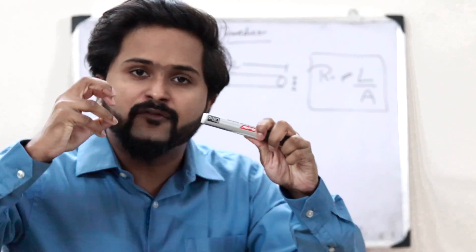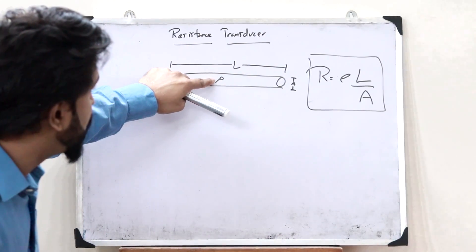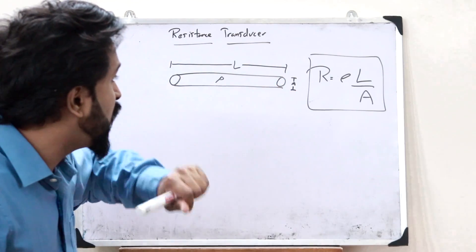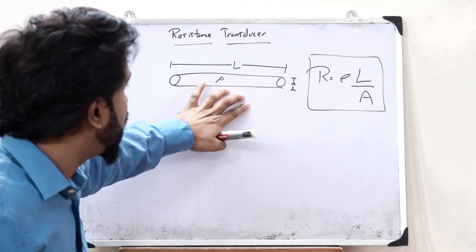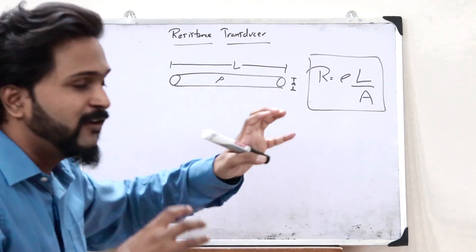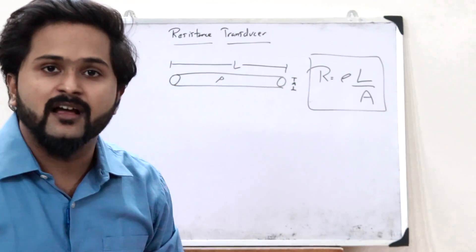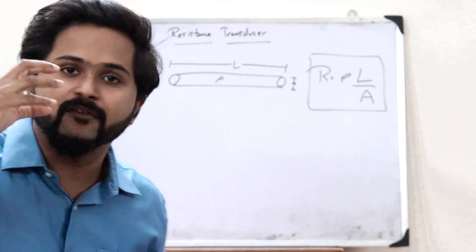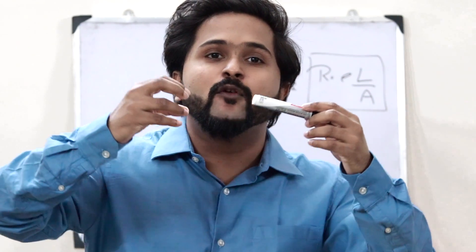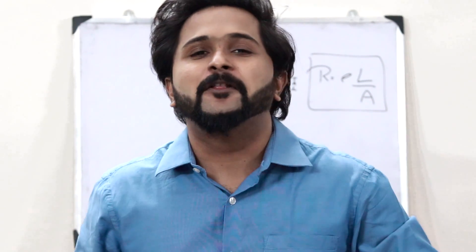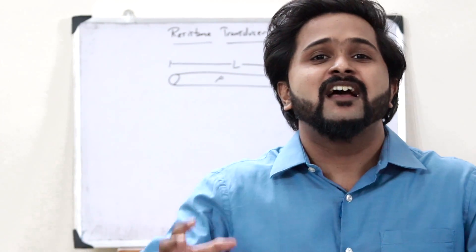what happens is that if a particular physical quantity can change either one of these parameters — that is either the resistivity, the length, or the area of cross-section of this particular conductor — then the resistance of this particular conductor will change, because resistance depends on these three parameters. Therefore, if a resistance transducer is used to measure a physical quantity and that physical quantity varies one of these parameters, a change in resistance is obtained. And this change in resistance can be used for the purpose of measuring that particular physical quantity.